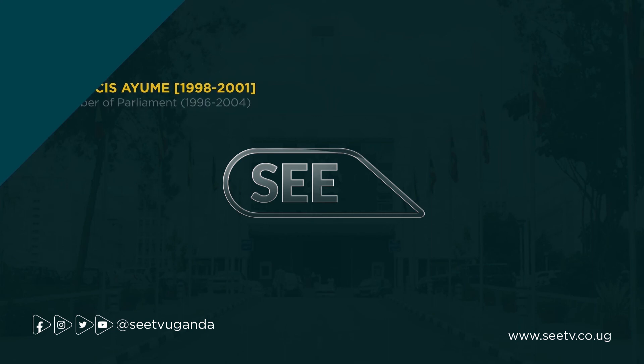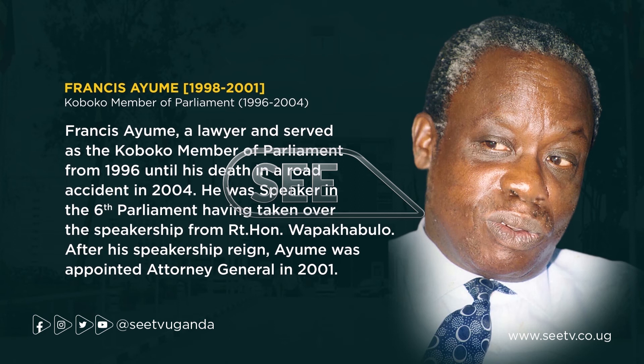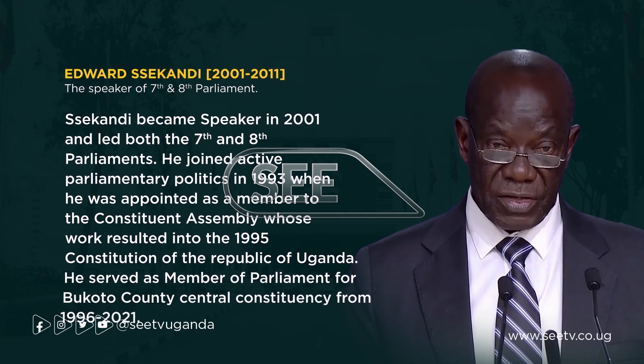Francis Ayume served from 1998 to 2001. He was a lawyer and served as the Koboko Member of Parliament from 1996 until his death in a road accident in 2004. He was Speaker in the Sixth Parliament, having taken over the speakership from the retired Honourable Wapakaburo. After his speakership reign, Ayume was appointed Attorney General in 2001.